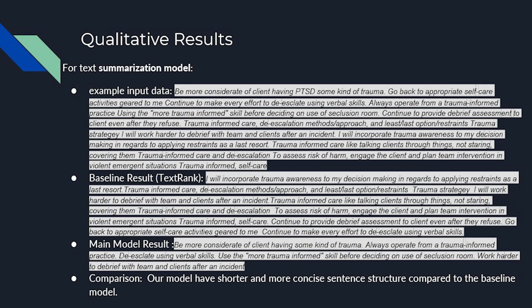Here we show a comparison of qualitative results between our baseline model and main model for the summarization task. The input data is a combination of 10 single responses. We can see that the baseline model outputs a summary of approximately the same length, but our main model achieves a shorter and more concise summary. The structured sentences in the main model output are much shorter and more effective, while the baseline output has a lot of long and hard-to-read sentences.